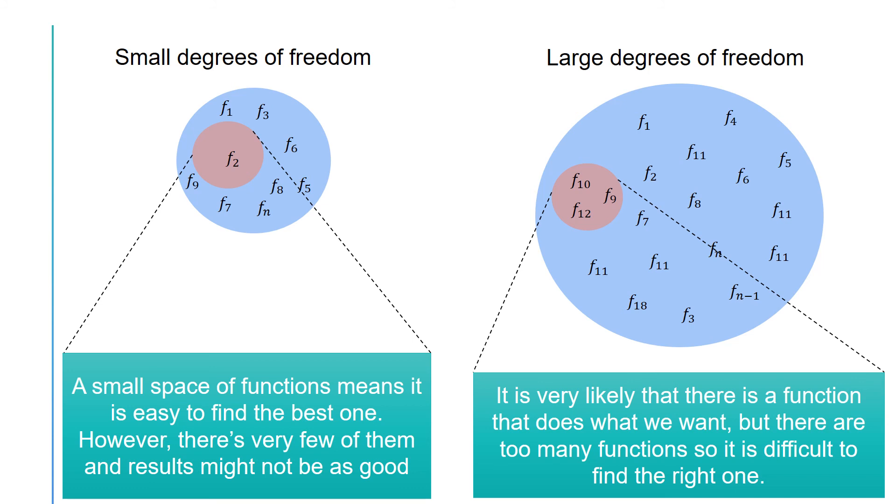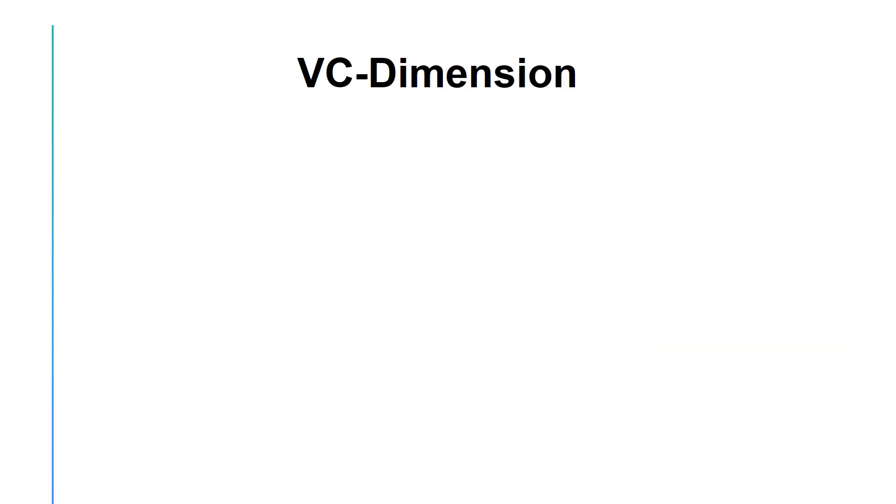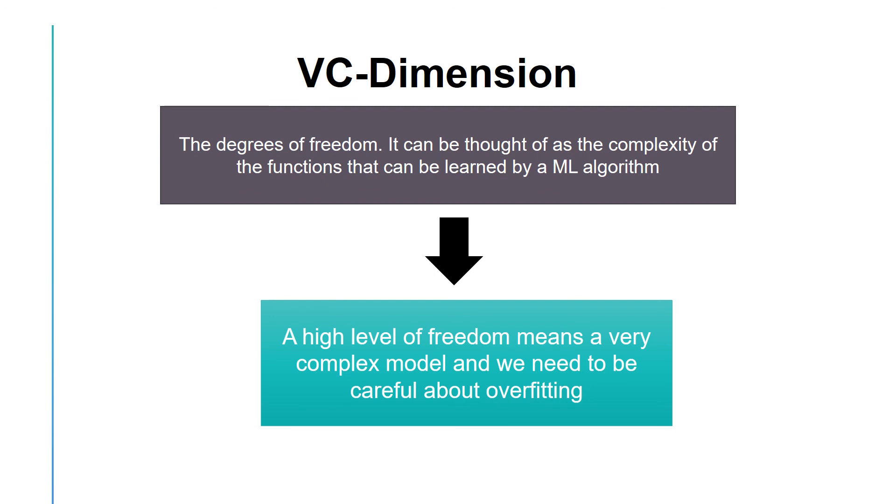The degrees of freedom for a model is technically known as the Vapnick-Chervoninkis, or VC, dimension. VC dimension measures the complexity of the functions that can be learned by a machine learning algorithm. A high level of freedom renders a very complex model and we therefore must be careful about overfitting.